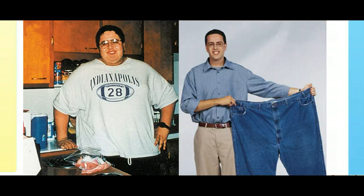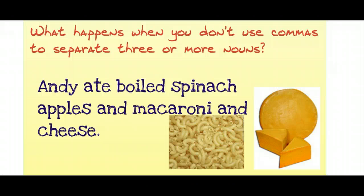What happens when you don't use commas to separate three or more nouns? Your sentence will not be clear. 'Andy ate boiled spinach apples and macaroni and cheese.' Because there are no commas, I have no idea where one idea stops and the next one starts. I don't know what a spinach apple is, but I for sure do not want to eat one boiled.